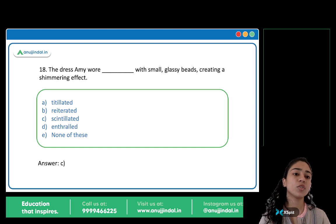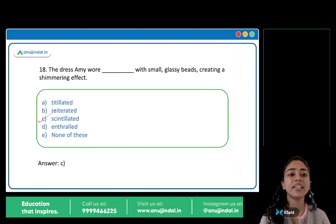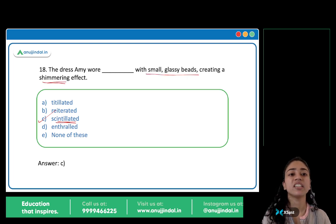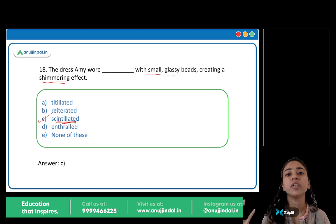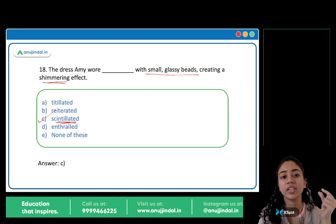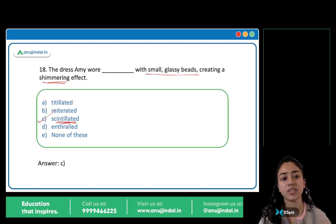The answer is option C: Scintillated. The dress scintillated with small glassy beads, creating a shimmery effect. Scintillate means to shine, to shimmer, to sparkle. Her dress was very sparkly and shiny — it scintillated.